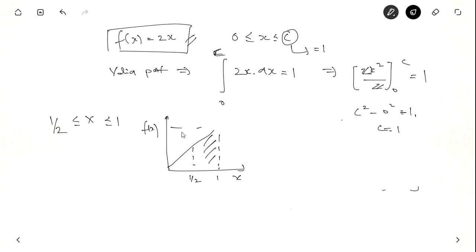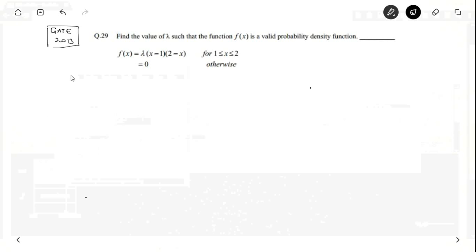So, if you solve this, integral f of x dx, a to b, half to 1, f of x dx. This will give you the probability half less than x less than or equal to 1. So, f of x is 2x, 2x dx becomes x squared. So, 1 square minus 1 by 2 the whole square, which is 3 by 4. So, this area is 3 by 4, which gives you the probability that x lies between half to 1.